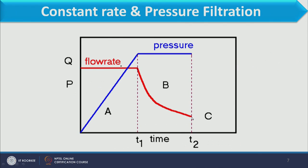Considering the vice versa: if we maintain pressure constant, the rate of filtration will keep on decreasing. If we later increase pressure, the filtrate rate can be held constant, but obviously the total volume collected will have decreased significantly. So for maximum output we must operate first with constant rate and then with constant pressure.